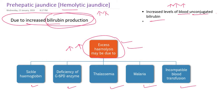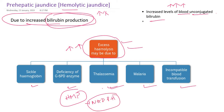In thalassemia, there are insufficient globin chains. In glucose-6-phosphate dehydrogenase deficiency, this enzyme — studied in the HMP pathway — is responsible for producing NADPH, which is critical for maintaining the integrity of the RBC cell membrane. When this enzyme is deficient, NADPH is not produced, the RBC membrane is not intact, and there is premature death of the RBC. In sickle cell, the RBC shape is altered, leading to premature and excess lysis.